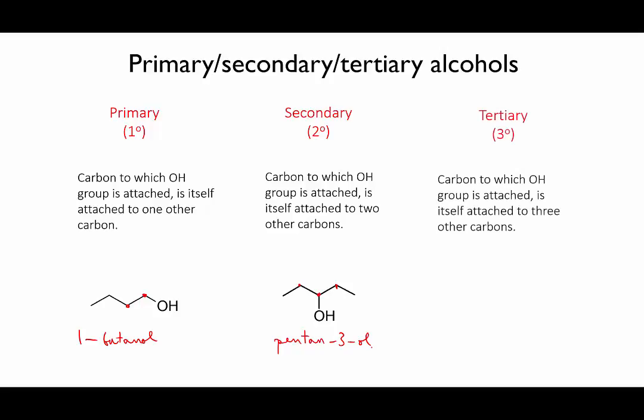Finally, a tertiary alcohol has the OH group on a middle carbon that has another substituent attached to it. This means the carbon to which the OH is attached is attached to three other carbons. This one is called 2-methylbutan-2-ol.